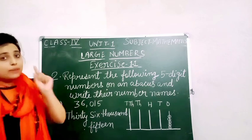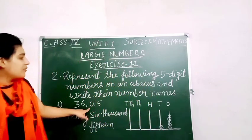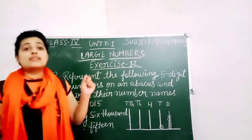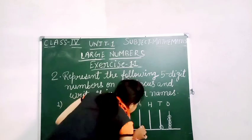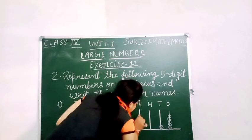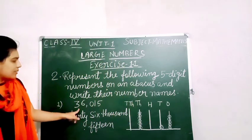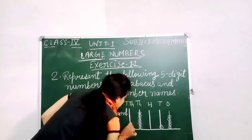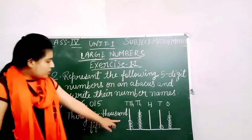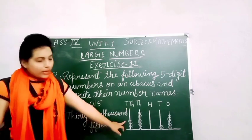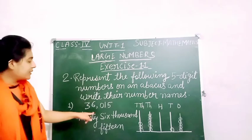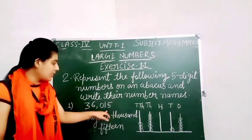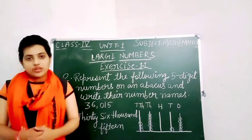And in the 100's place the number is 0, so no beads. In the 1000's place we have 6: 1, 2, 3, 4, 5, 6. And in the 10,000's place the number is 3, so we will draw 3 beads: 1, 2, 3. So this is the number shown on the abacus and the number name is thirty-six thousand and fifteen.